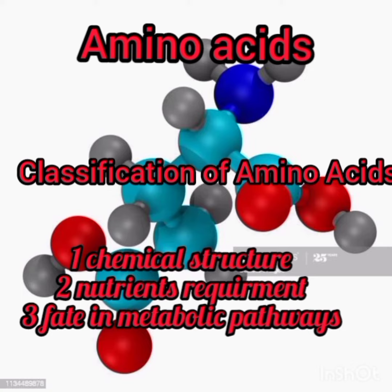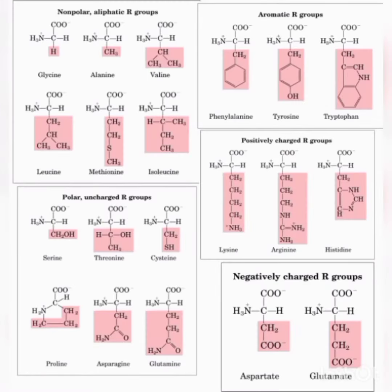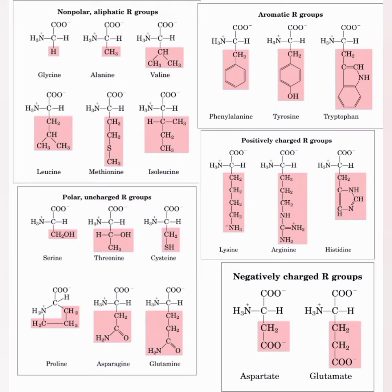Classification of amino acids — there are three types: first is chemical structure, second is nutrient requirement, and third is fate in metabolic pathway. On the basis of chemical structure, there are five types: non-polar aliphatic R-groups, polar uncharged R-groups, aromatic R-groups, positively charged R-groups, and negatively charged R-groups.